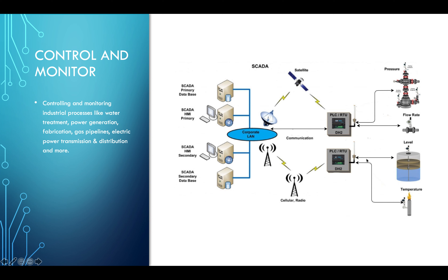The arrow is bidirectional because it handles both monitoring and control. For example, if we're monitoring the temperature and it's too high, we can lower the level in the container or lower the pressure in the tubes. The RTU also performs data acquisition — it samples analog devices, converts analog signals to digital via an A-to-D converter, and sends data back over the network. This supports controlling and monitoring of industrial processes like water treatment, power generation, gas pipelines, and electric power transmission and distribution.